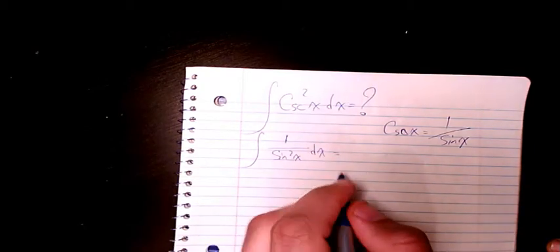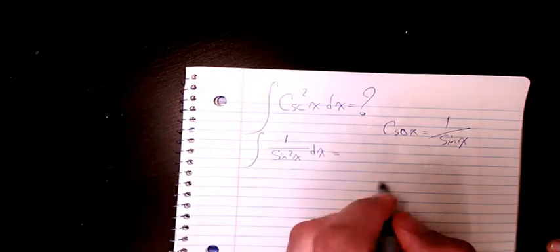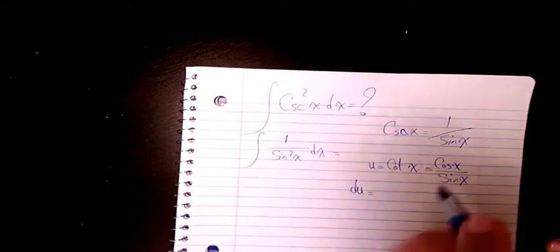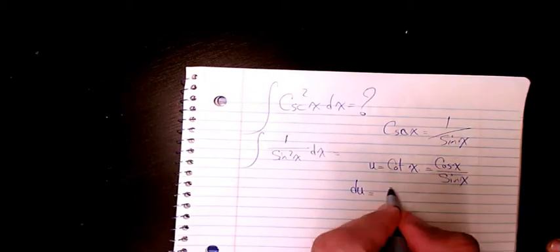And here I'm gonna use substitution method. Consider u as cotangent x, which is cosine x divided by sine x. If you want to find du, it's going to be the derivative of the numerator